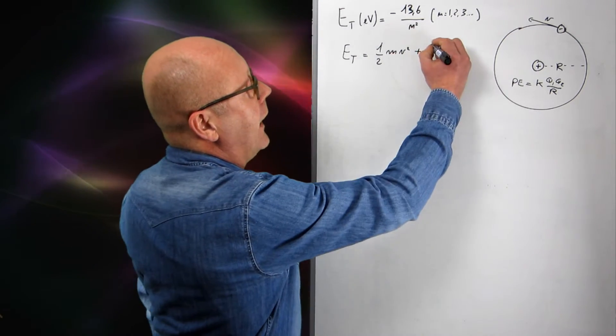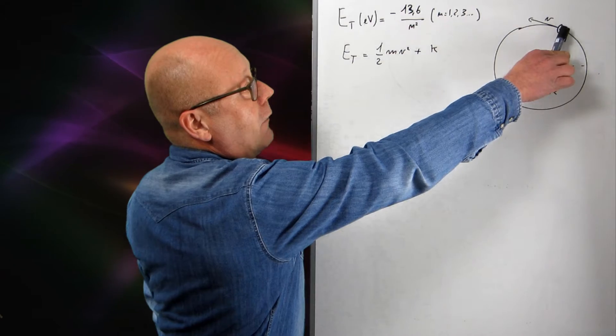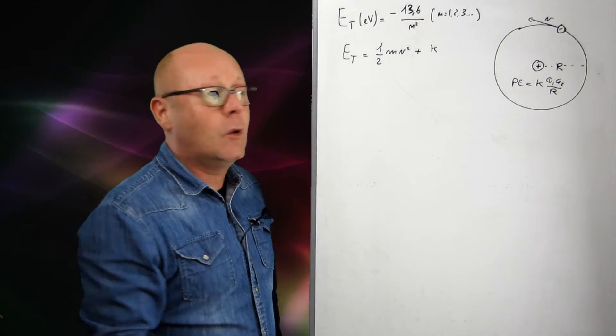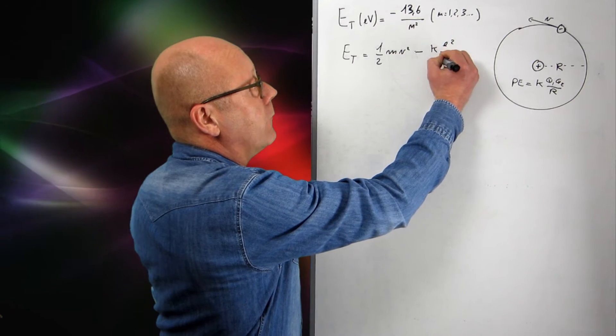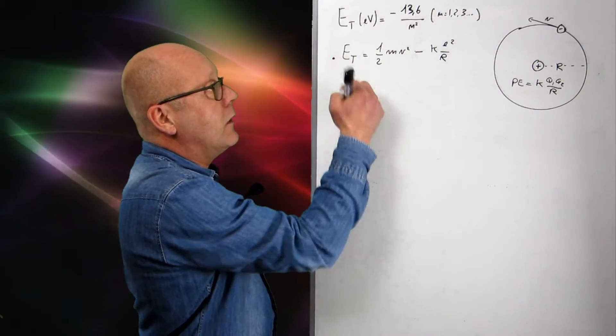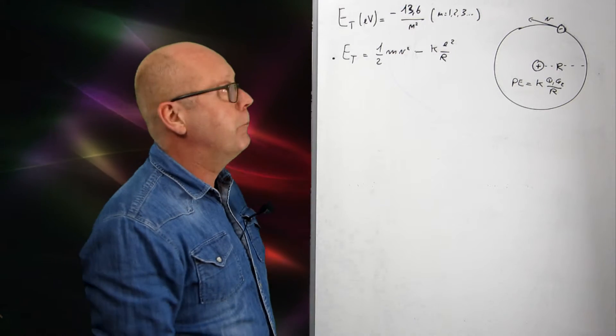So applied to the right case, we have actually k, and then the two charges are actually elementary, with one being negative. So this becomes minus e squared on r. So now we have an expression of our energy for the atom.